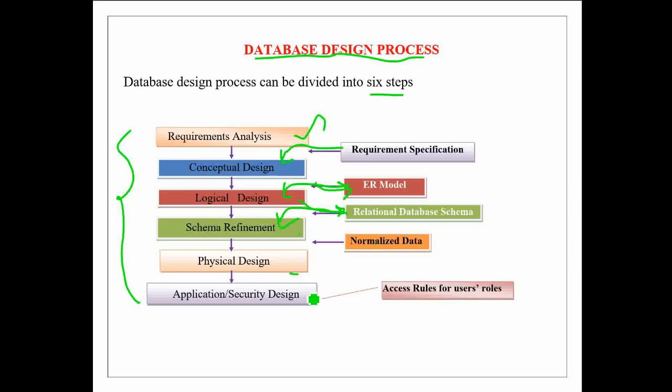After this physical database design step, application and security design starts. In this step, all the entities and its roles are identified for every application that accesses the database and then the access rules are enforced to impose security on the database by permitting the users to access the data only if they have access rights on that part of the database.